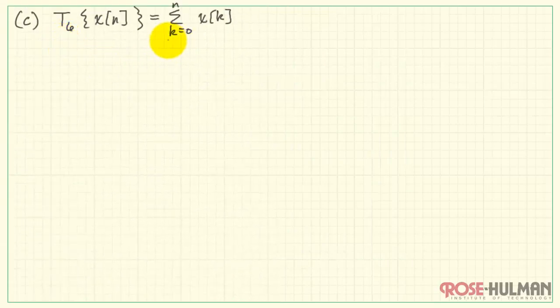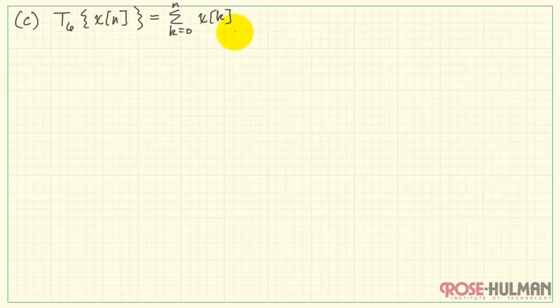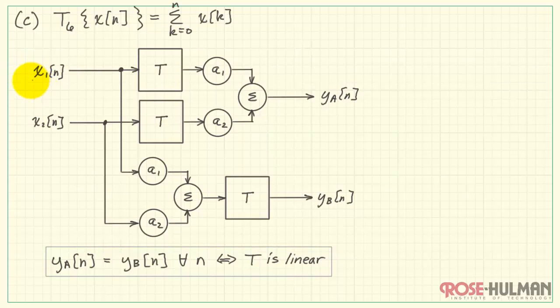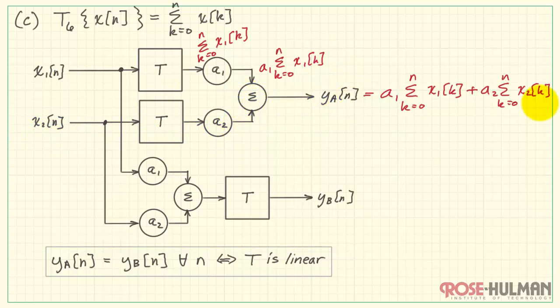And our third system, T6. We sum from K equals 0 up to the current time step N. And we're summing the values X of K. So as before, let's pass X1 through our system. Multiply it by A1. Same thing for X2. And add those two together.